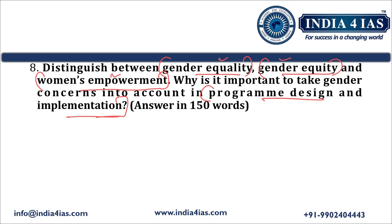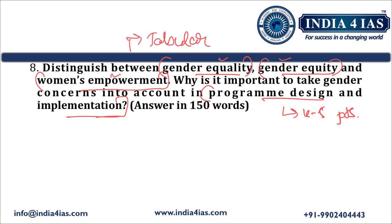In the first part, we should define the concepts and give examples; in the second part, write four to five points, then a conclusion. The distinction between gender equality, gender equity, and women's empowerment should be written in tabular format, as it is more effective for comparing different concepts and their features and examples. We should begin our answer with an introduction quoting a report — like the World Economic Forum's Global Gender Gap Report — with relevant data related to gender inequality.